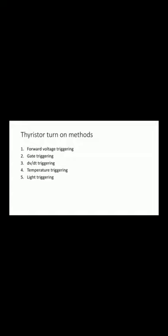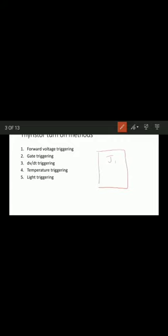Coming to the first one — forward voltage triggering. Whenever forward voltage is applied between the anode and cathode with the gate circuit open, junction J2 becomes reverse biased. As a result, a depletion layer forms across J2, and the width of this layer decreases as the anode-to-cathode voltage is gradually increased. A stage will come when the depletion layer across J2 vanishes.